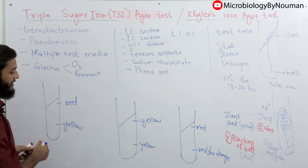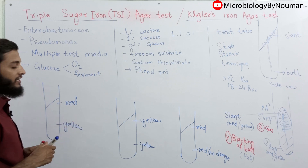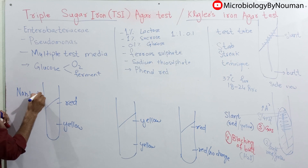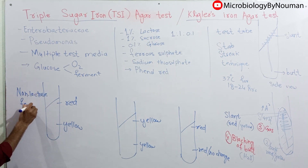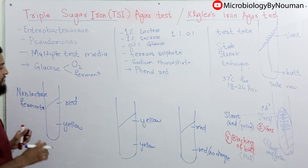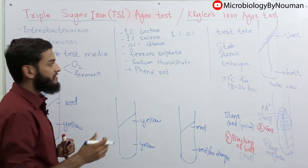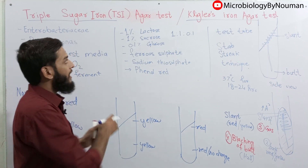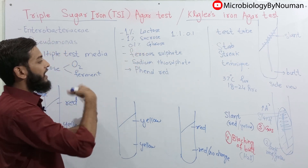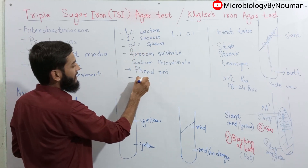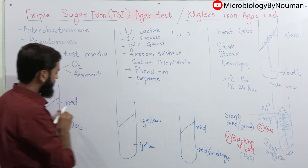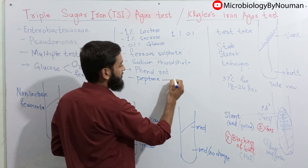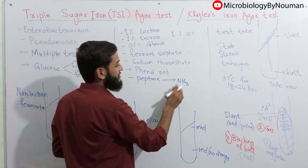In the first result, red slant and yellow butt means the bacteria that we have inoculated is a non-lactose fermenter. This is because the media contains glucose. The bacteria has broken down glucose aerobically first, and since glucose is present in very low concentration, after glucose is utilized, the bacteria has utilized peptone, which is also present in the media. When peptone is broken down, it is broken down into ammonia, and ammonia is alkaline.